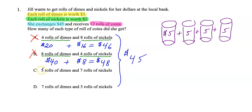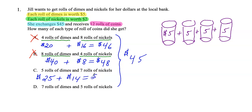$5 times 5 rolls of dimes — that's $25, plus $2 times 7 is $14. That equals $39. That does not match up with $45, so D is my answer.